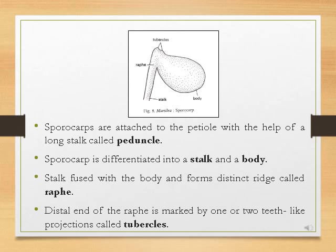The sporocarps of Marsilea are attached to the petiole with the help of a long stalk called the peduncle. Looking at the sporocarp, we can differentiate it into two parts: one is the stalk and another is the body. The stalk fuses with the body and forms a distinct ridge known as the raphe. The distal end of the raphe is marked by one or two tooth-like projections called tubercles.